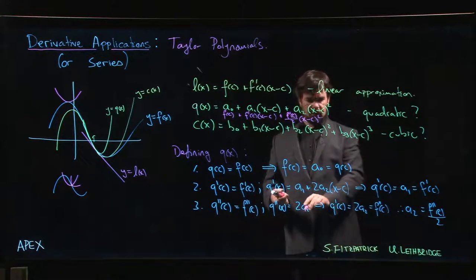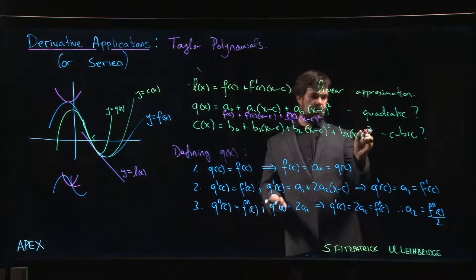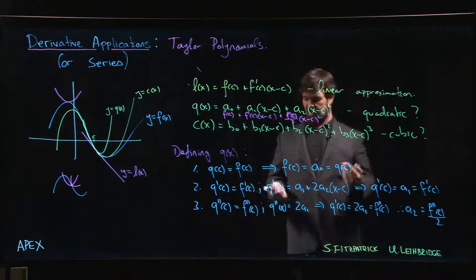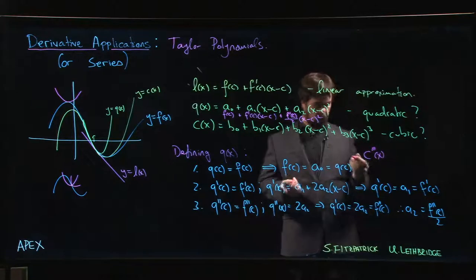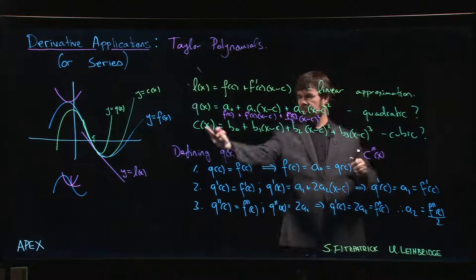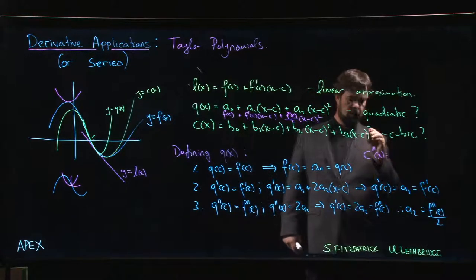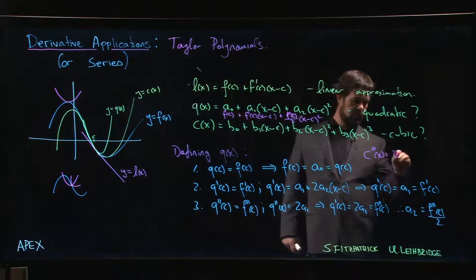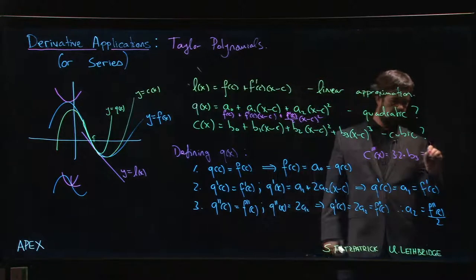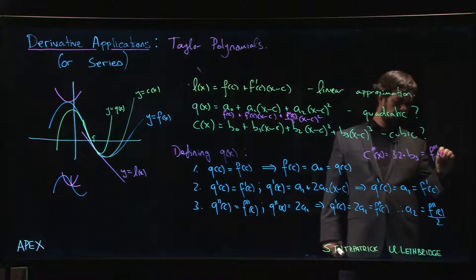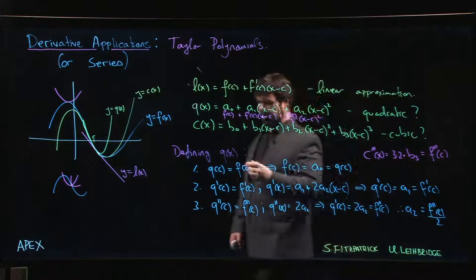Then you'd come down to here. When you did this derivative, you'd have the 2a₂, you'd have a 3 times 2 times b₃ times x minus c, so again it goes away. When you get to the third derivative, what you're going to find is that c triple prime of x, or if you like, because I shouldn't have used c, c and c, oh well, you're going to get it's going to be 3 times 2 times b₃, and you'd want that to be equal to F triple prime at c. So you work that out and you'd find that the cubic approximation should be F of c plus F prime of c times x minus c.